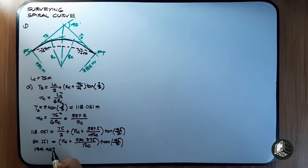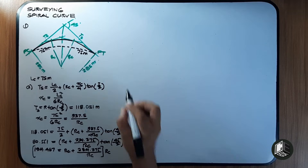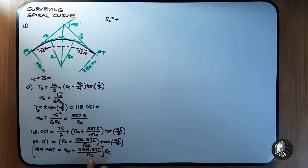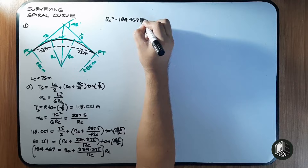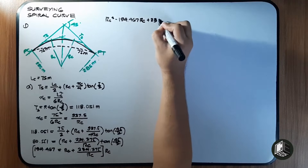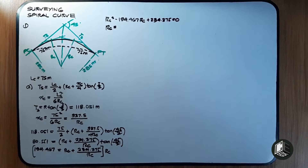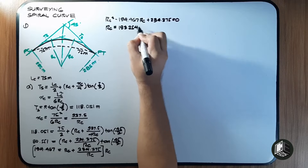Multiplying through by Rc to eliminate the denominator: Rc² - 194.467Rc + 234.375 = 0. Solving this quadratic equation gives two values of Rc, and the correct answer is Rc = 193.254 meters, which is the new radius of the circular curve.